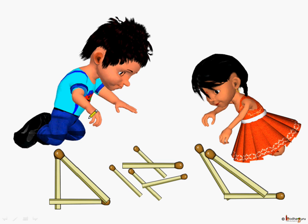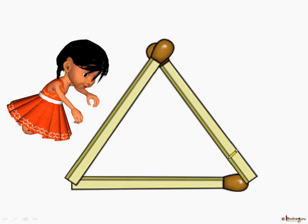Here this is Aman and this is Khushi. Using the matchsticks, they are trying to make different triangles. Let us see how they differ. Here is the triangle made by Khushi.